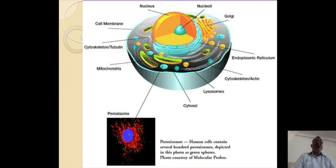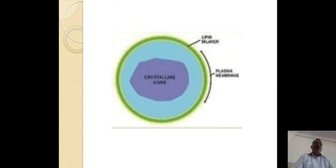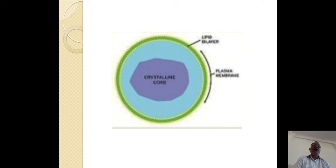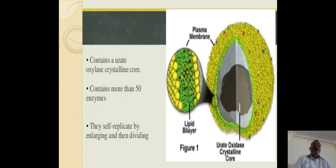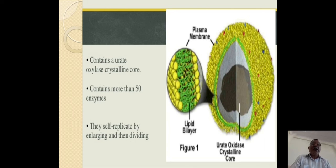Its location in the cell — you can see that there are many paroxysomes present in the cell cytoplasm. It is a single structure like lysosomes and is surrounded by a single lipid membrane, by lipid layers. Inside you can see crystalline forms. When we cut the section, you can see very clearly the bilipid layer. Inside the paroxysomes there is a urate-oxalate crystalline core and it contains more than 50 enzymes. They replicate by enlarging and then dividing.